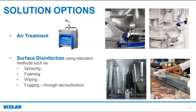Surface disinfection — there are four main standard methods for applying disinfectants to surfaces: we can spray disinfectants on surfaces, we can foam it onto surfaces, we can wipe the surface with disinfectant, and we can also disinfect surfaces using fogging as an application method through aerosolization. I'm now going to hand over to Peter, who will talk you through the differences between surface disinfectants and air treatment.